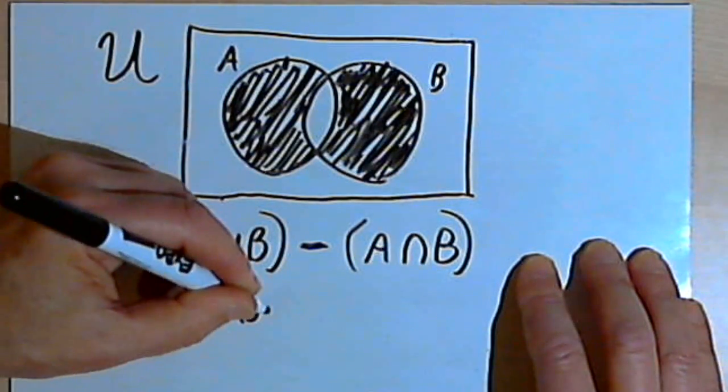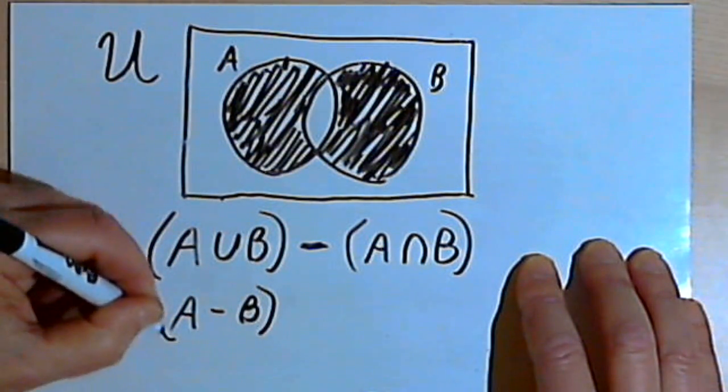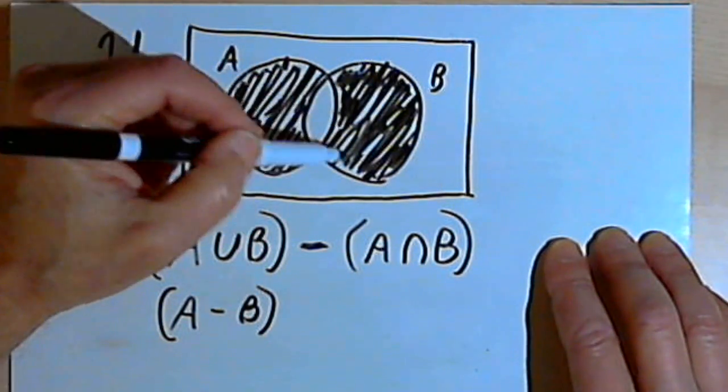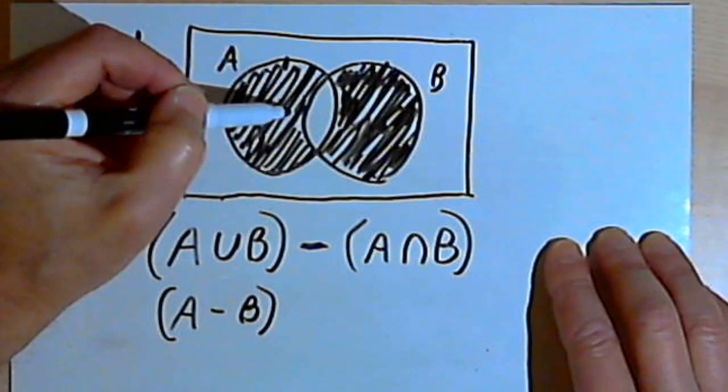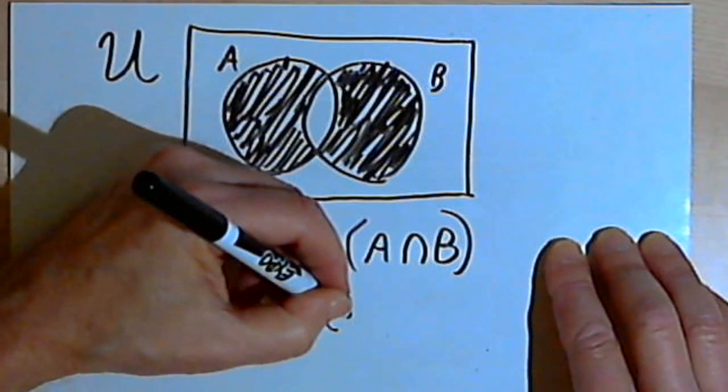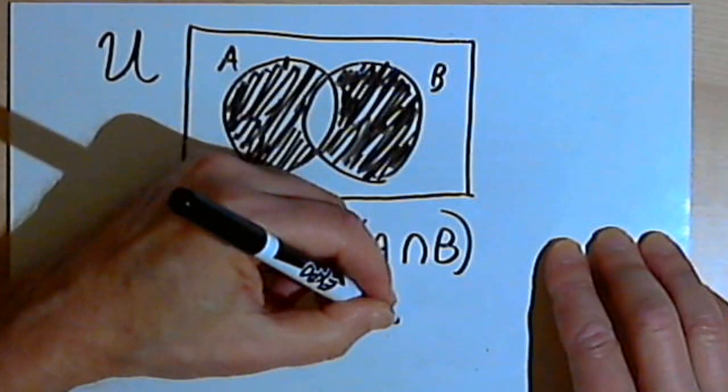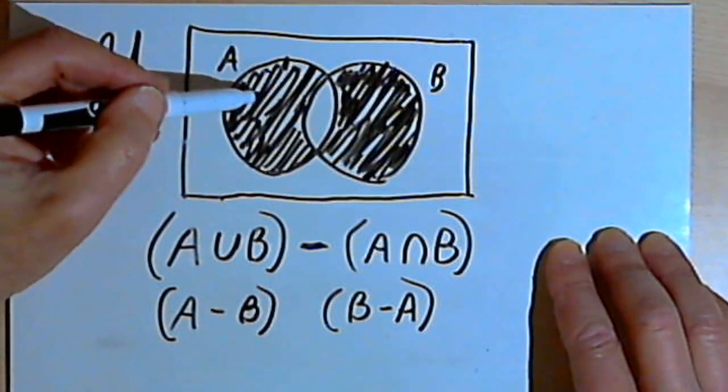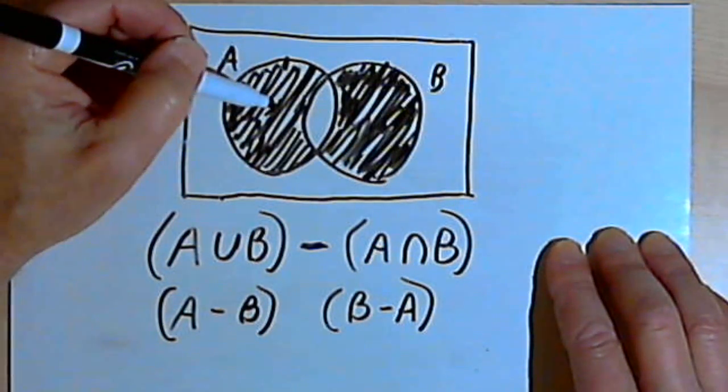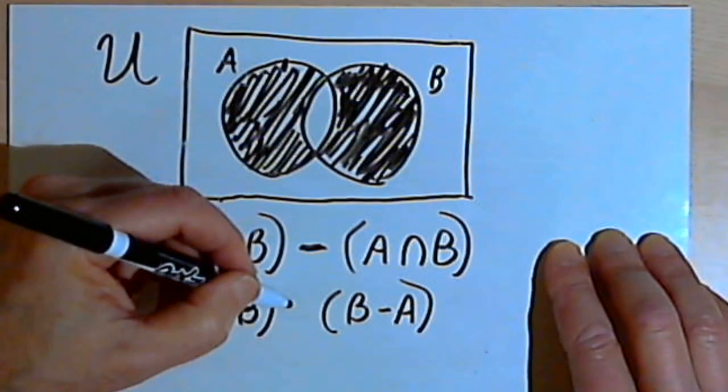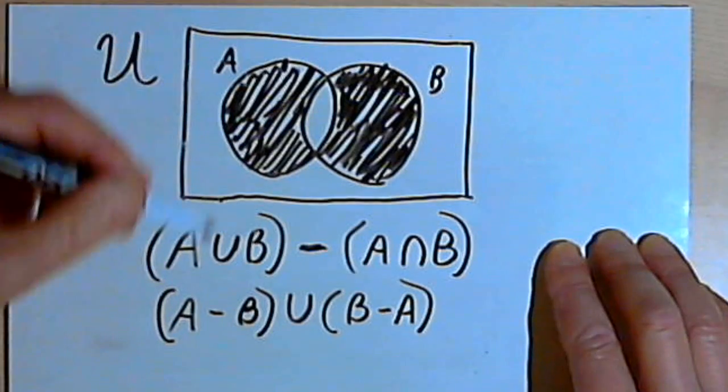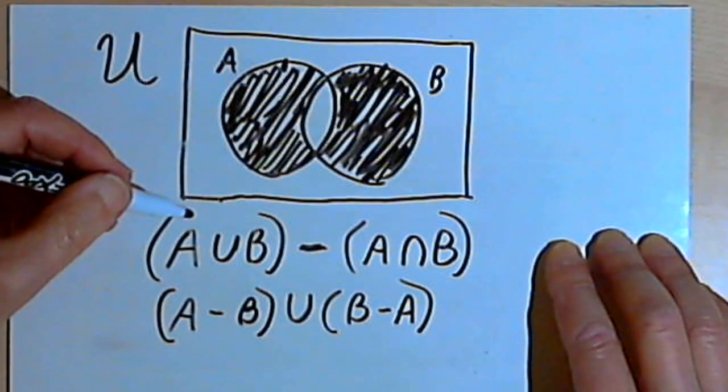And I could also think about set B and say set B is completely shaded except for the part that's in A. So that would mean I would have a B minus the part that's in A. And since I want both of those shaded parts of A and B, I would put a union sign between the two of them. And there may be more ways than that to do this. You could experiment and see what else you could find.